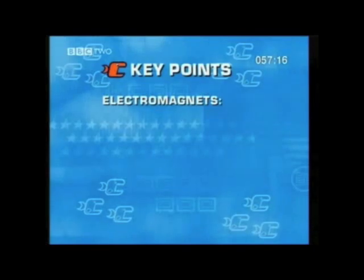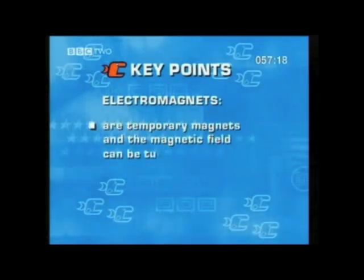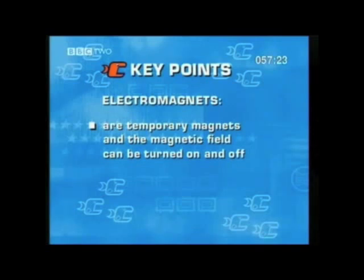Electromagnets are temporary — they are only effective when the electrical current is switched on. This means that their magnetic fields can be turned on and off. This section on electromagnets completes our unit on electricity and magnetism.